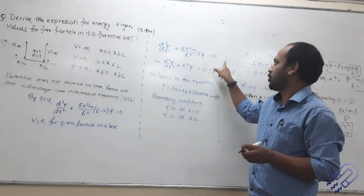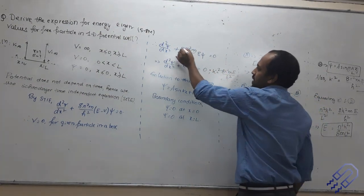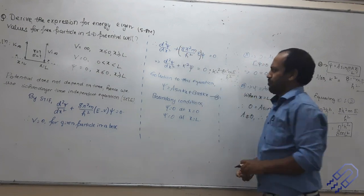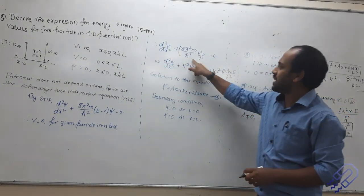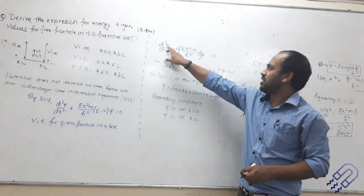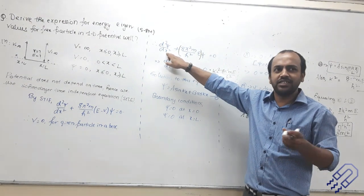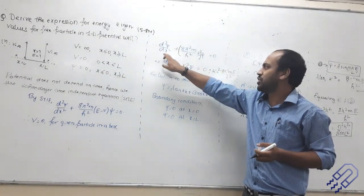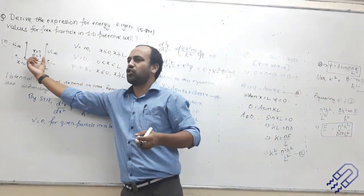This expression is very straightforward. What I can do is replace the coefficient term — 8π²mE/h² — and call it k². The variable here is ψ (psi), and ψ is a function of x. So x is the variable and ψ is also a function of x. We are differentiating with respect to x, leading to a standard second-order differential equation.